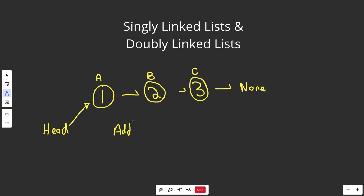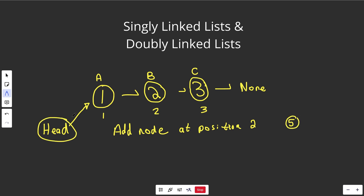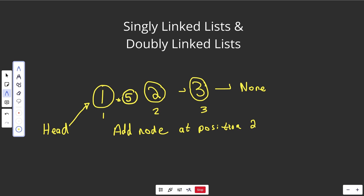There are a few different things you might want to do with a linked list. For example, if you wanted to add a new node at an arbitrary position — say position 2 — we don't have positions like an array, but you can still think of it as first, second, third spot. To add a node with value 5, you'd have to start at your head, traverse the list until you got to that position, then point 1 over to 5 and point 5 over to 2. That's a general O(N) operation because you have to traverse from the head to that position.